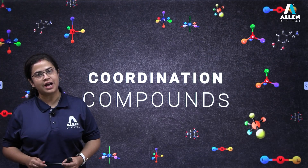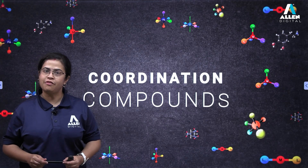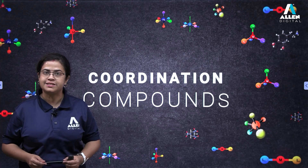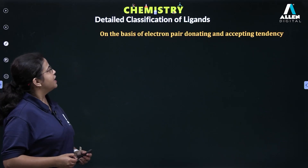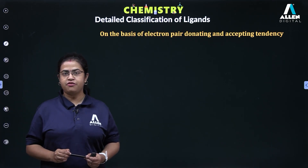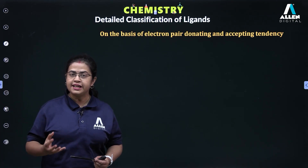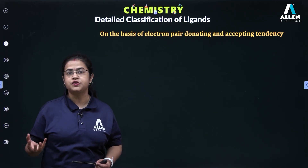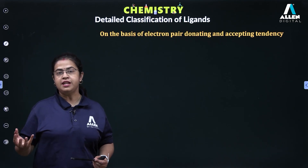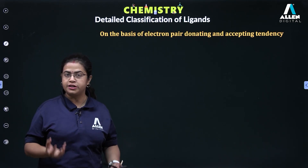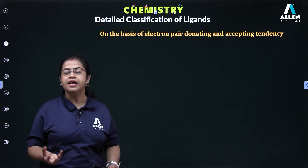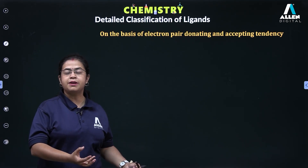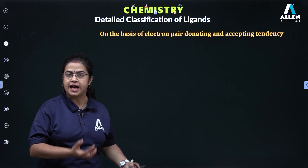Hello everyone, welcome to Allen Digital Classes. Today we are going to discuss synergic bonding under coordination compounds — it's a very important subtopic for NEET. First of all, let us find out what ligands are. Ligands are electron-rich species which act as Lewis bases or donors when we form complexes. The central metal atom or ion is the electron pair acceptor, so ligands are the donors and the central metal atom or ions are the acceptors.